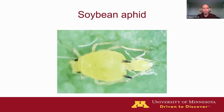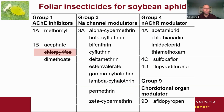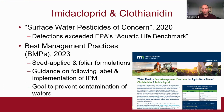Soybean aphid — I'm calling it the old pest, even though we've only been dealing with it for about 20 years. I want to focus on what we've got in our toolbox for insecticides. We should all know by now that the organophosphate chlorpyrifos is no longer available — its tolerances were revoked, so we cannot use it for management of soybean pests anymore.